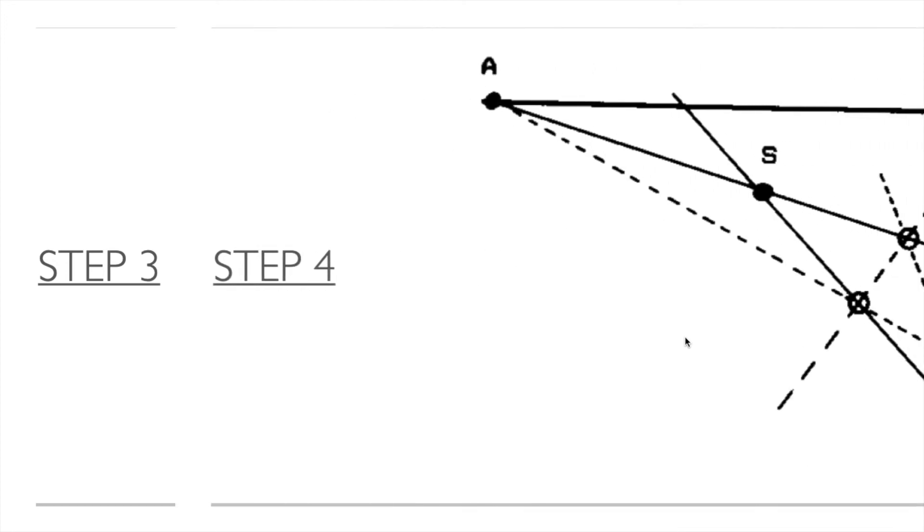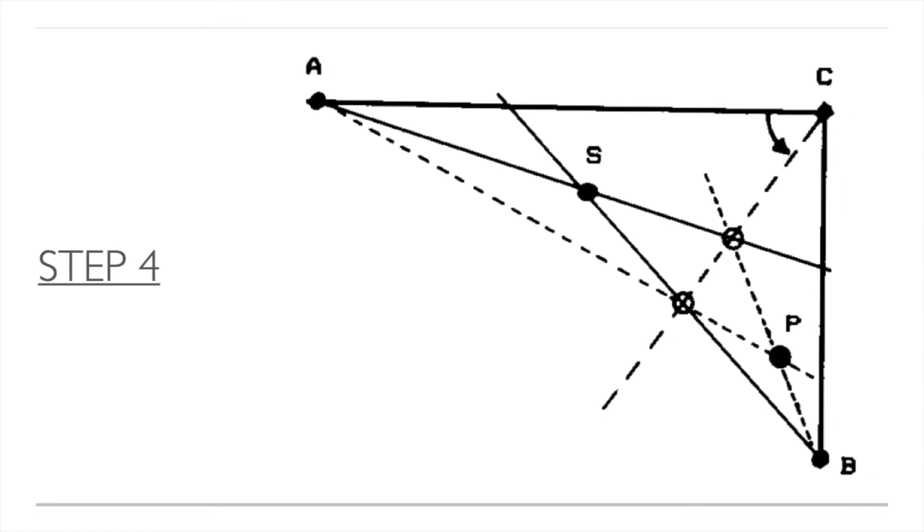Step four. Now draw a line from point A passing through this intersection point. These dotted lines intersect at a new point, that is point P. This is the final point, one of the points in the circumference of the conic curve.